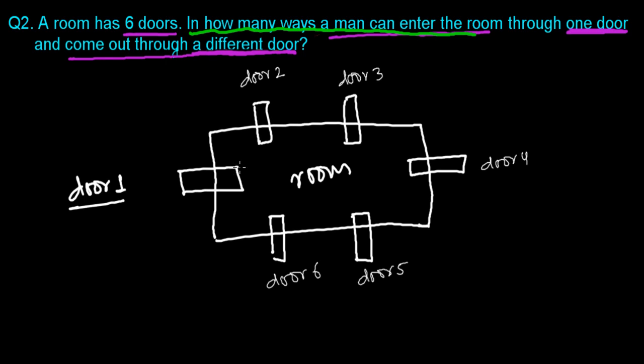In how many ways can a man enter the room? There are six doors, so the guy can enter from any of them — door one, door two, door three, door four, door five, or door six. Think of it like six pieces of cake on a plate: you can choose any one. So the guy can enter from any door — it is his choice.